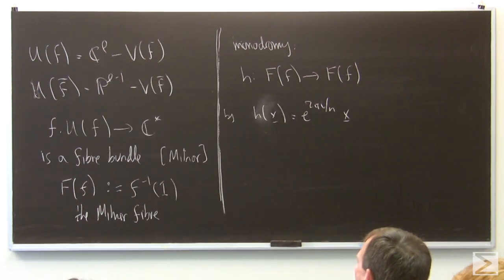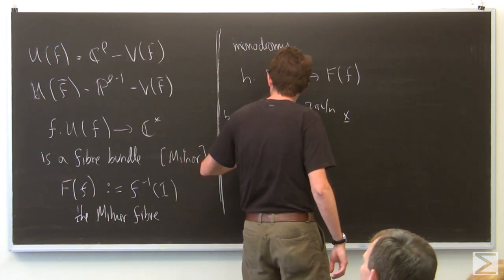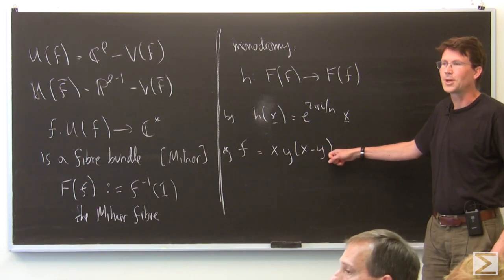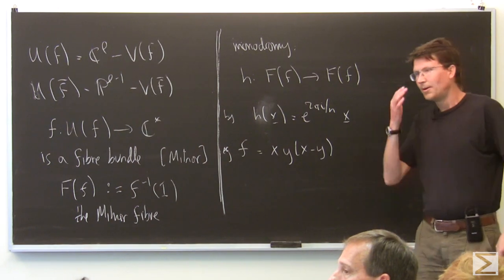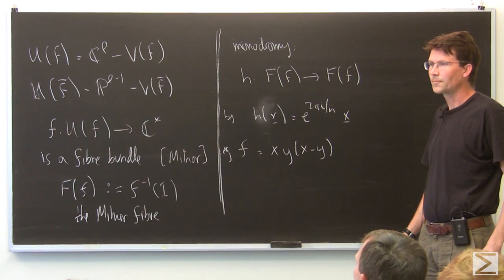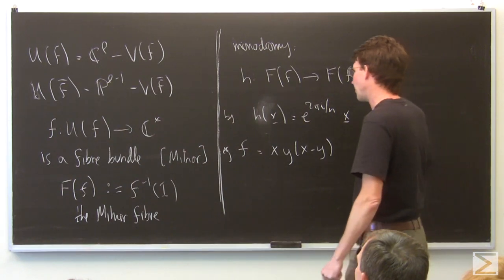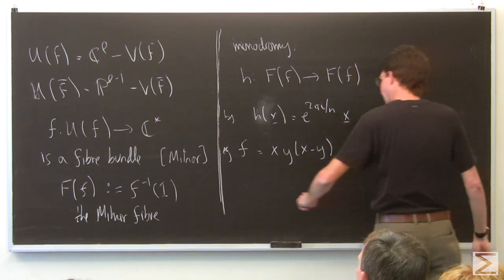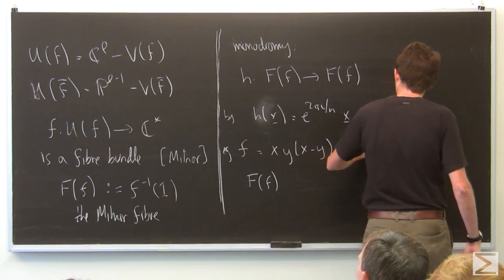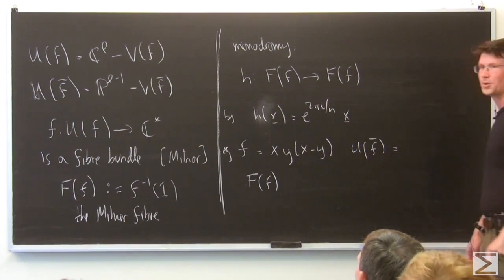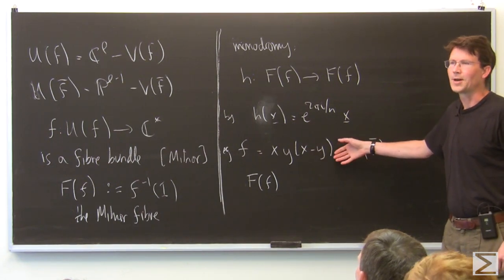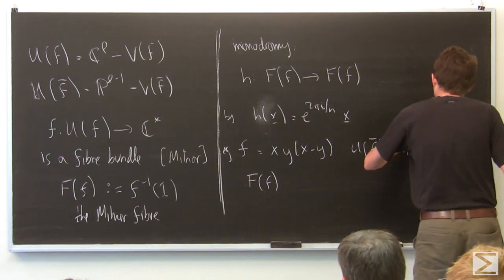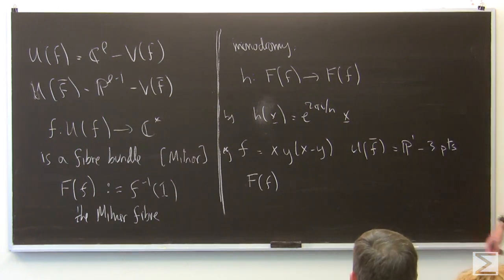In particular, there's a particularly explicit monodromy operator here. This is living inside complex space with a diagonal action of a root of unity. If I have a degree n polynomial and I multiply all the variables by the same root of unity, as long as that root of unity is a multiple of the degree, if I pull it out it just disappears. So this restricts to an automorphism of the Milner fiber.